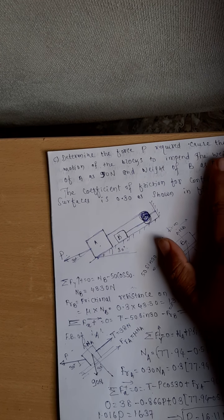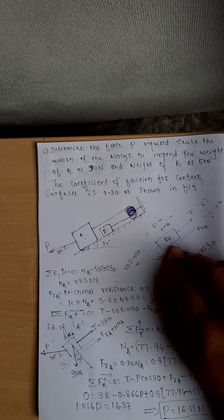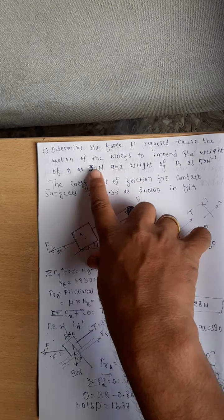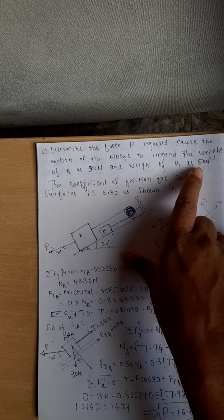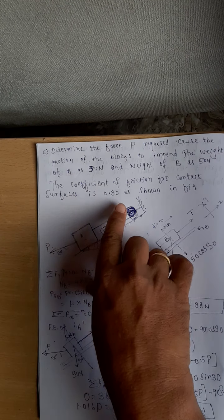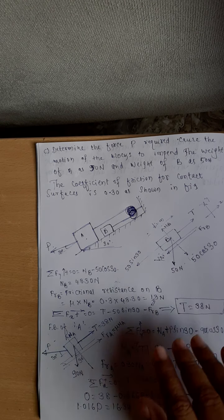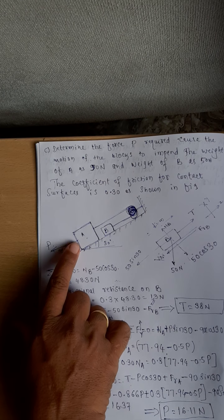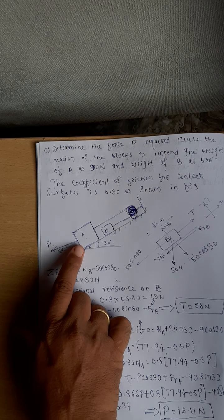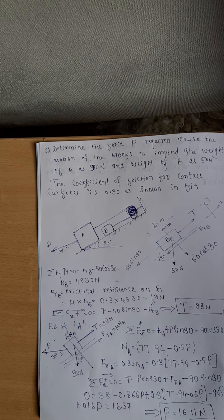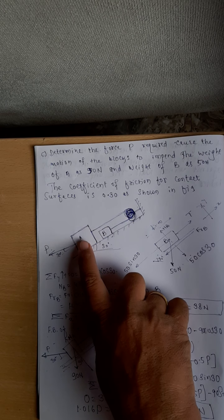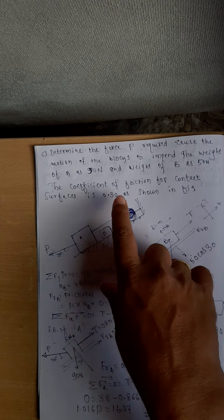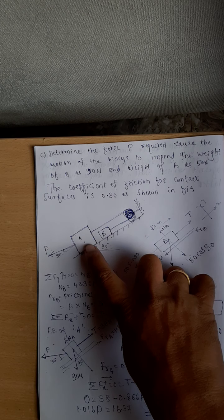Next, we have one more problem. Determine the force P required to cause the motion of the block to impend. Weight of A is 90 N and weight of B is 50 N. The coefficient of friction for all contact surfaces is 0.3 as shown in the figure. The force P is applied at an angle; the surface is inclined at an angle of 30 degrees with the horizontal. There are two blocks: block A and block B.